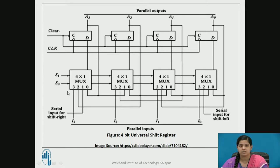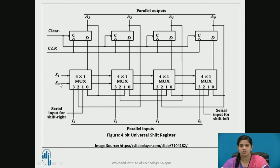If we want to select input 0 of all the multiplexers, we set S1 and S0 as 00. To select input 1 for all multiplexers, we set S1 as 0 and S0 as 1. To select input 2 of the multiplexers, we set S1 as 1 and S0 as 0. If we give S1 and S0 both as 1, we select input 3 of the corresponding multiplexers.